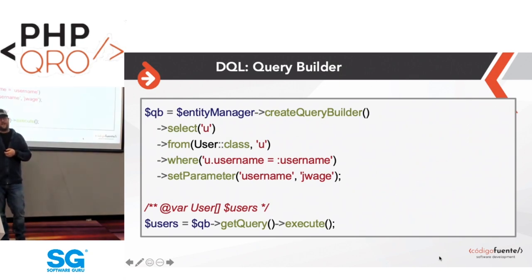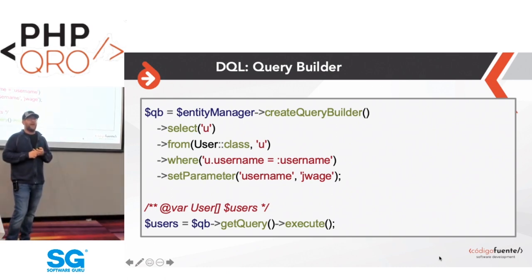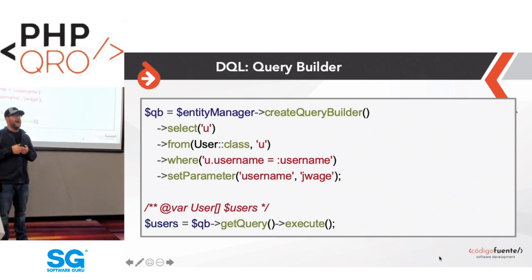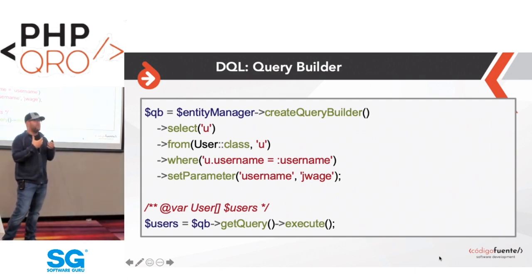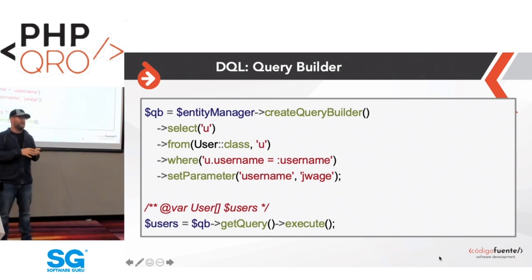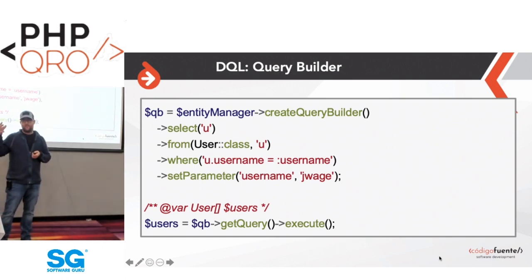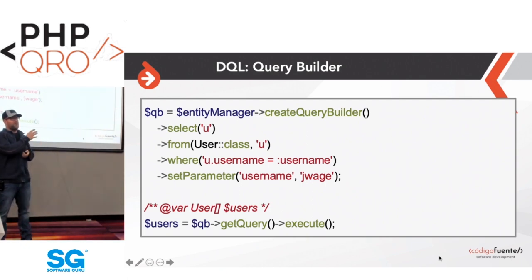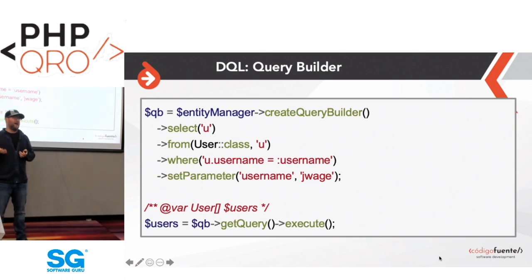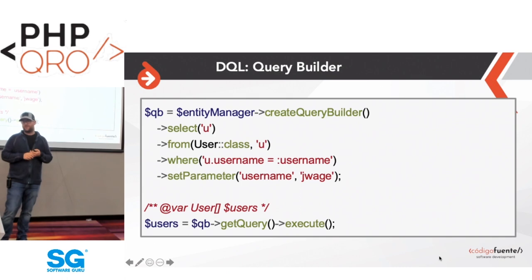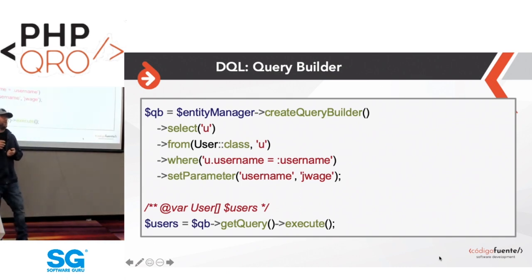The Entity Manager has a createQueryBuilder method that returns a QueryBuilder object with a fluent interface. You specify which entity to pull objects from — not a table but the entity class — add WHERE conditions, and use setParameter to pass values replacing placeholders. For example: give me the user object where username equals 'joh'. This generates a DQL query thinking in PHP classes, which is then parsed into SQL.